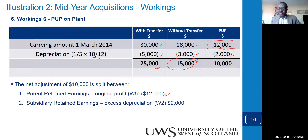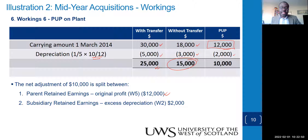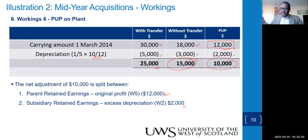The buyer (subsidiary) has over-depreciated by 2,000, thereby overstating expenses. So add back 2,000 to the buyer's (subsidiary's) retained earnings. The 10,000 net PUP on the plant reduces the PPE figure, which has been overstated, by 10,000.